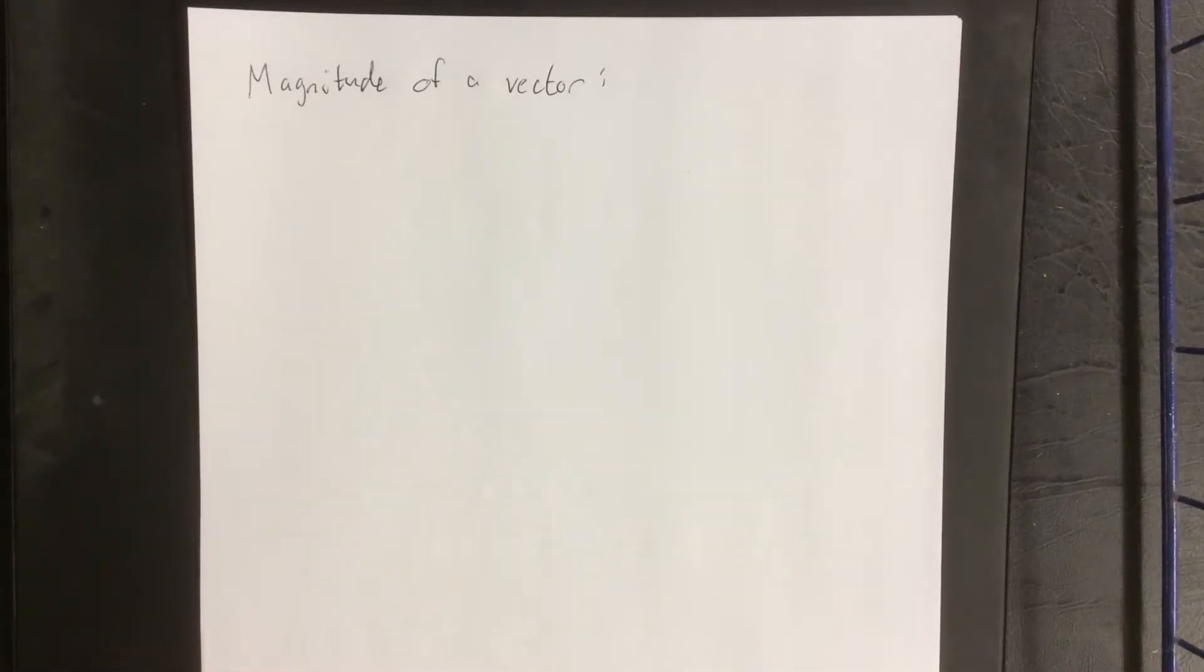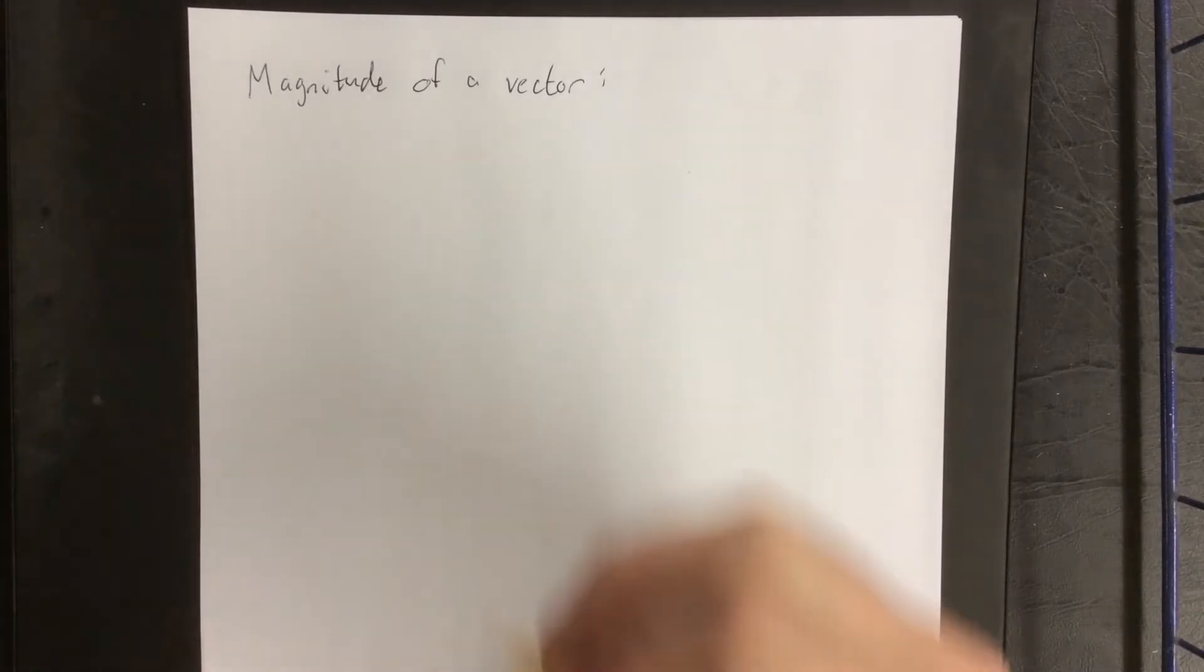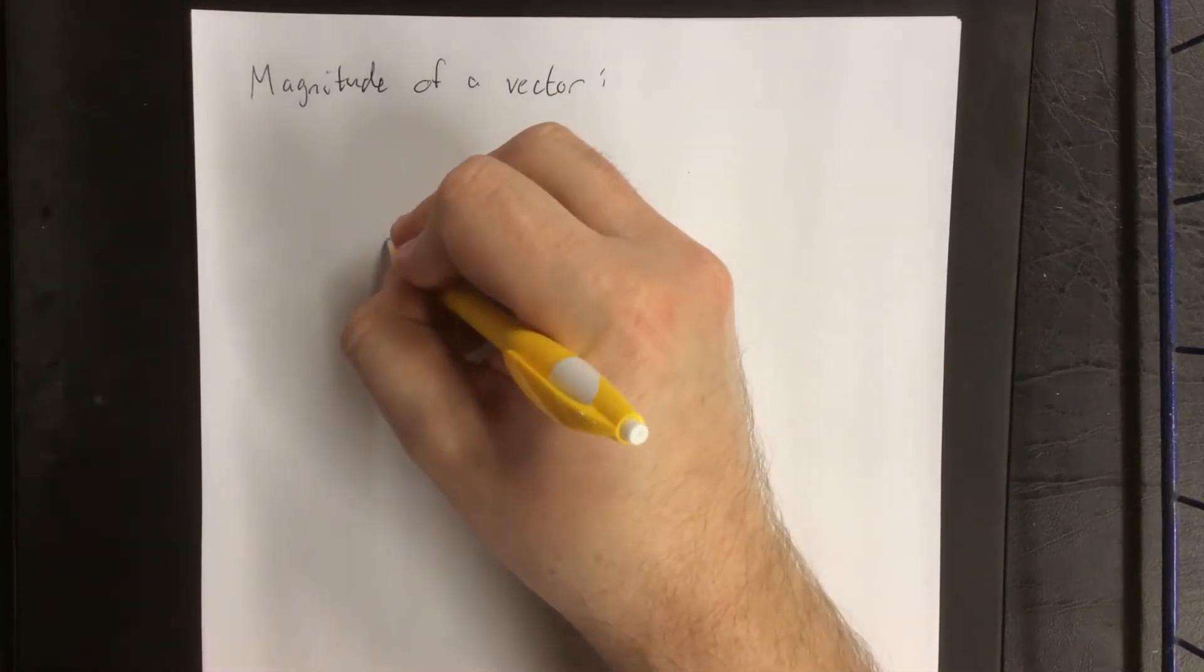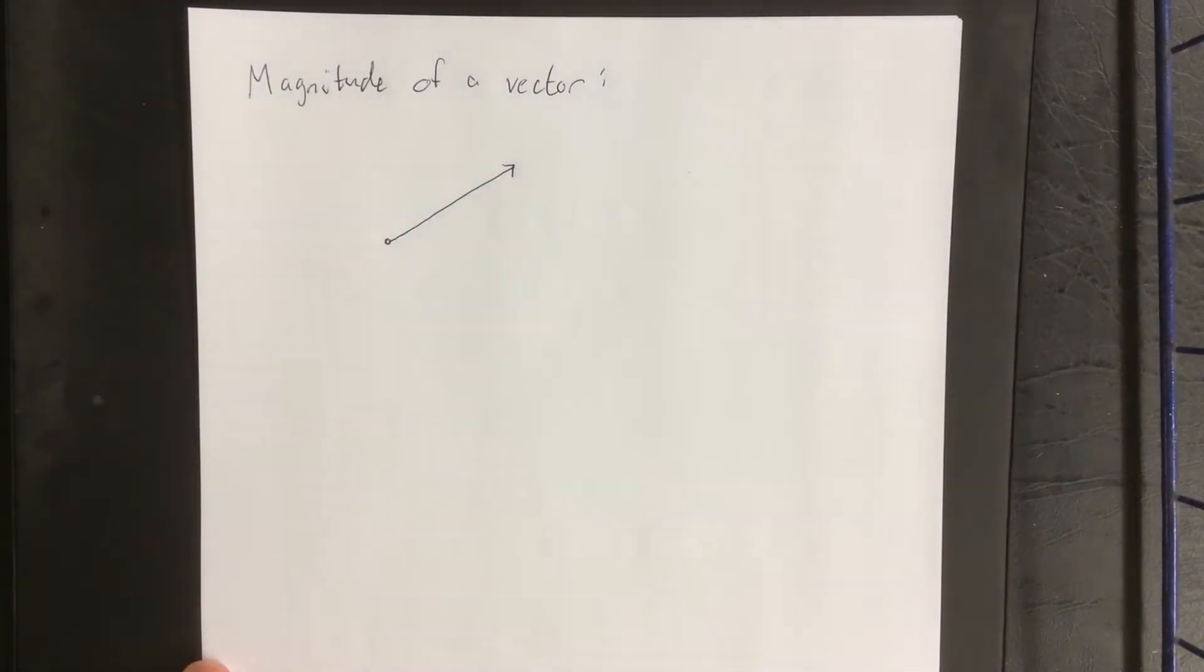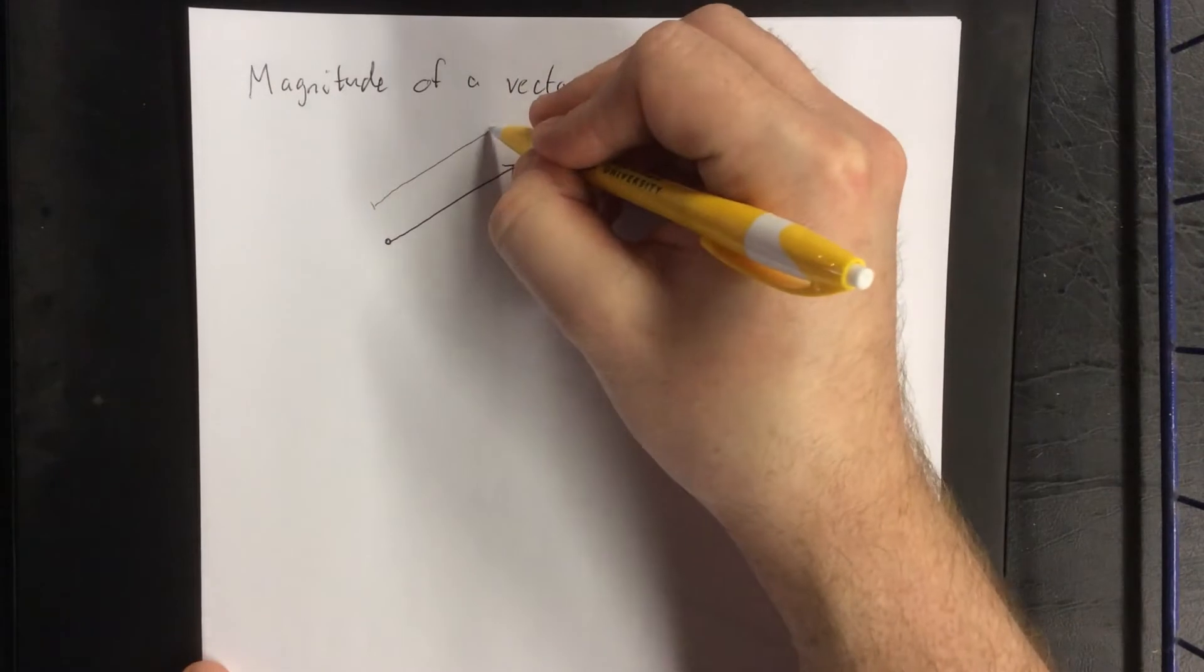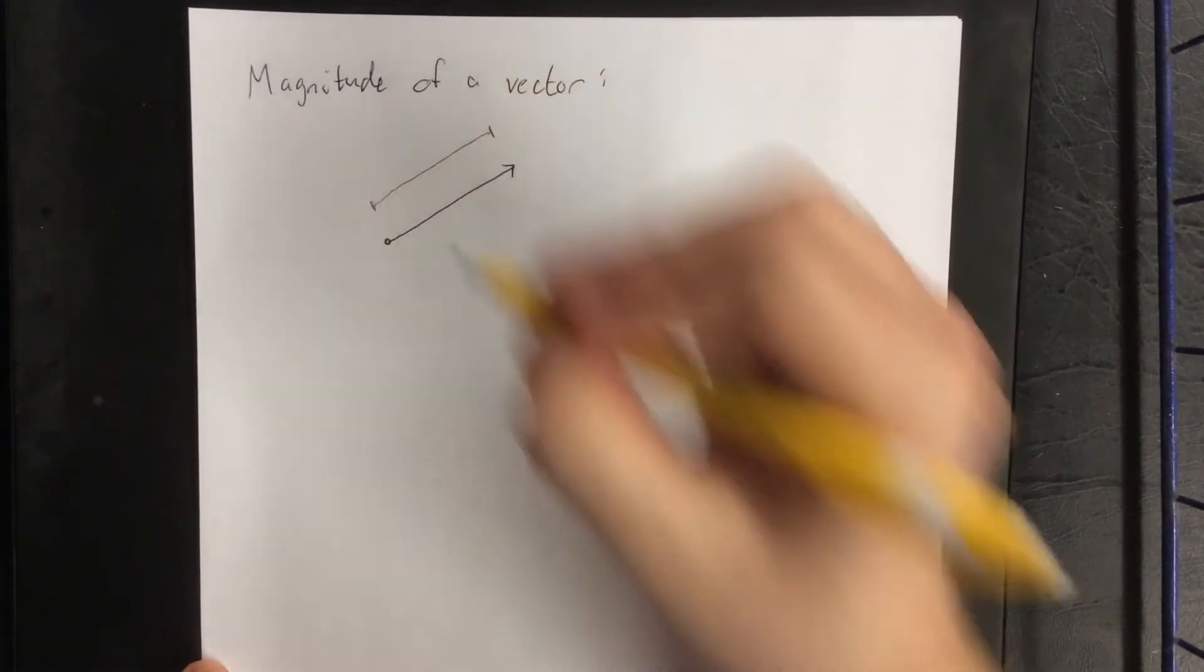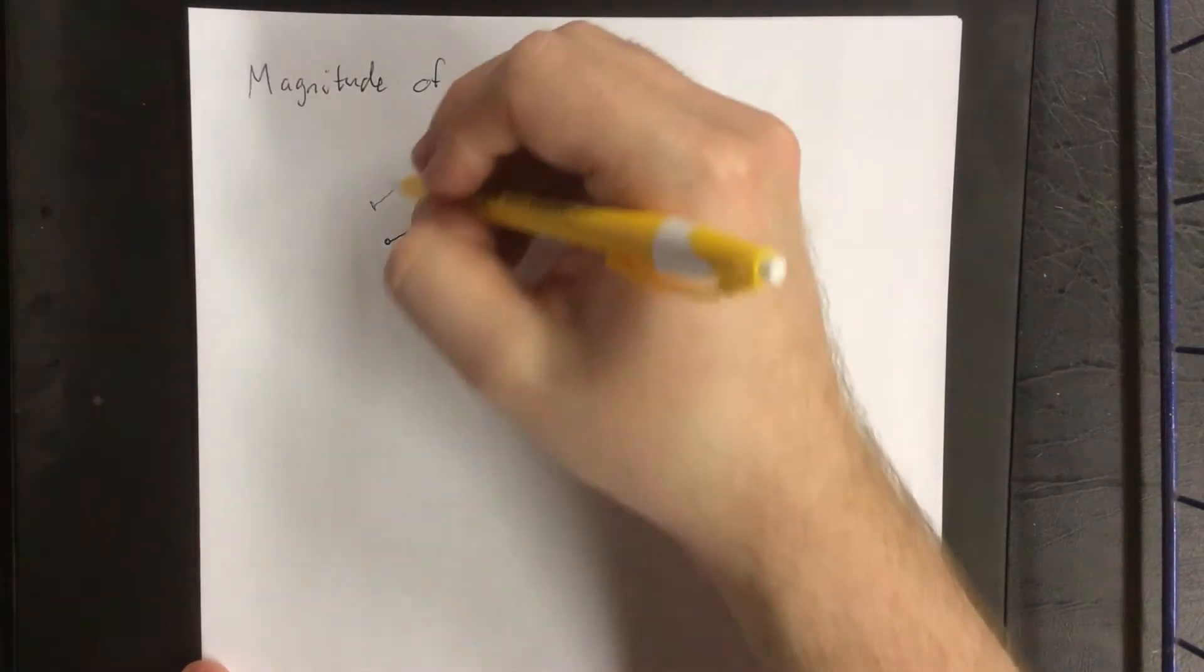The magnitude of a vector refers to the length of the vector itself. If I consider any vector such as this one, the length associated with it is the magnitude of the vector as a line segment rather than as a directed line segment.